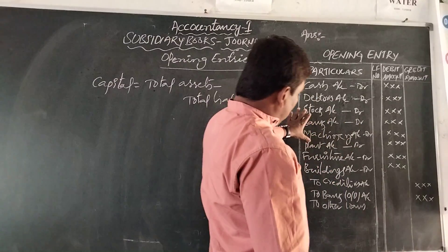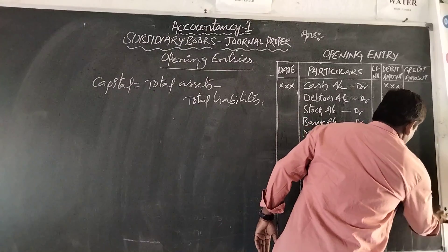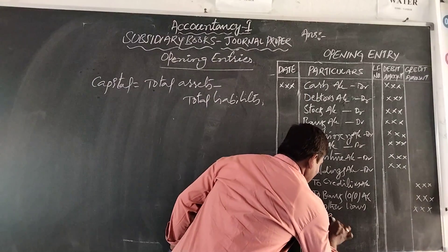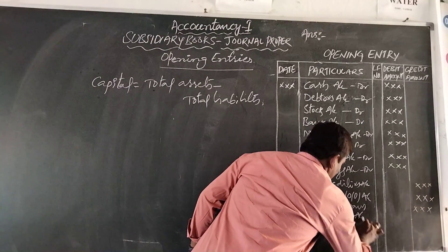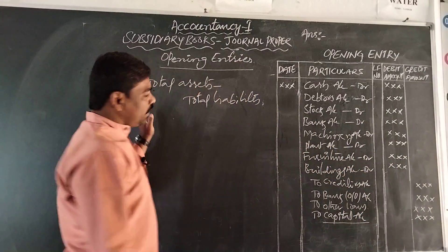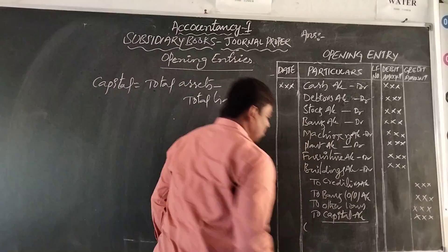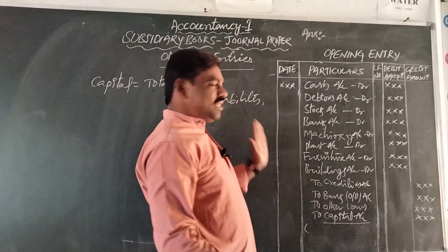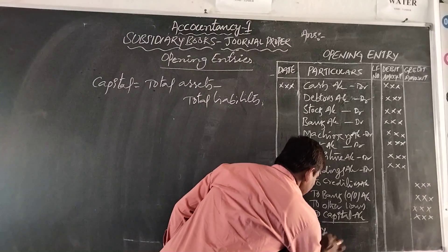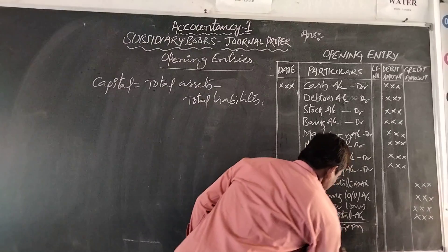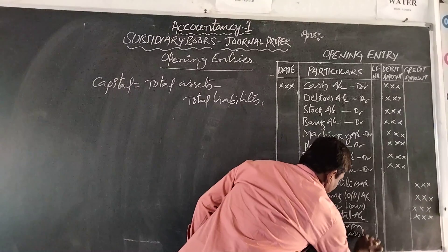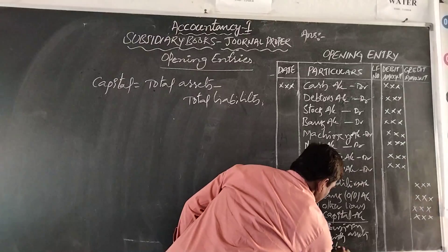After writing all the assets and liabilities in the opening entry, from the total assets we deduct total liabilities to get the capital amount, which is entered as Capital Account credit. This amount is found using the accounting equation. The narration written is: 'Being business started with various assets and various liabilities.'